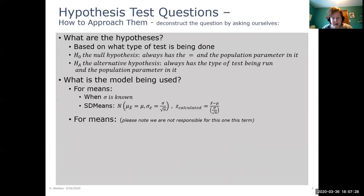For means, and remember we're not going to be responsible for this one for this term. If sigma is unknown, then we have our sampling distribution of means again. But this time around the difference is instead of sigma, we have our sample standard deviation. And we'd have a t calculated. But again remember, we're not going to be doing that for this term.